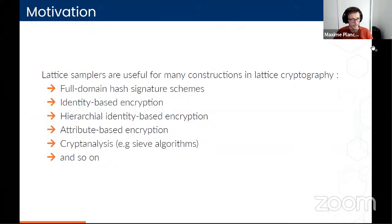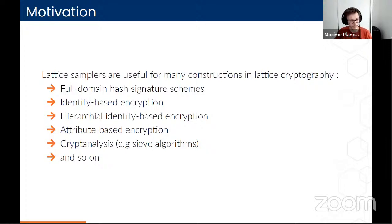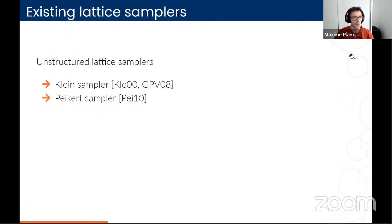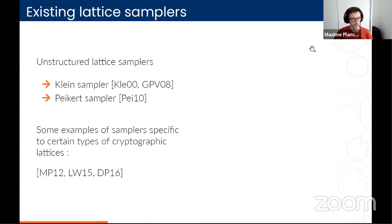We want to do this because for many constructions in lattice cryptography, lattice samplers are a very useful tool — here's a list of examples of what you can do with a lattice sampler. The list of existing practical lattice samplers is not very long. For unstructured lattices, we have the Klein sampler and the Peikert sampler. For specific types of cryptographic lattices, there exist some other samplers, but we focus on general lattices. These two unstructured lattice samplers share some common properties: they are constructed as randomized variants of decoding algorithms, they sample from discrete Gaussians, and they have a precision-to-width trade-off.